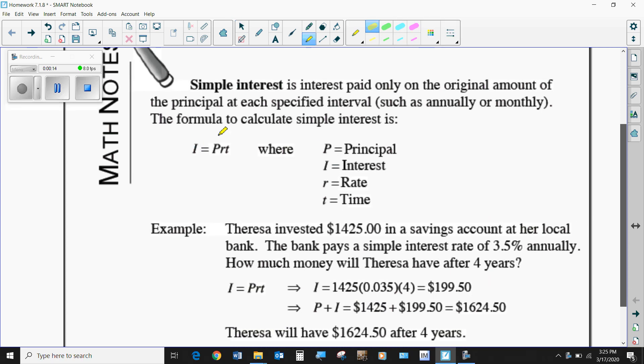As you're reading through a problem, you should set up every one of those variables and plug in the piece of information that you know. So this is how I would usually go about doing that. I would just do the I, the P, the R, and the T. And as I'm reading through, Teresa invested $1,425, so that's going to be the principal, $1,425.